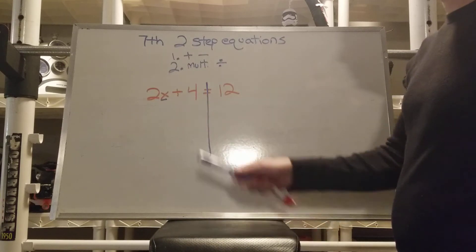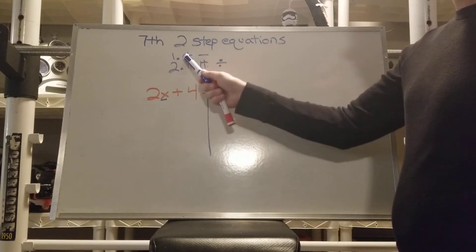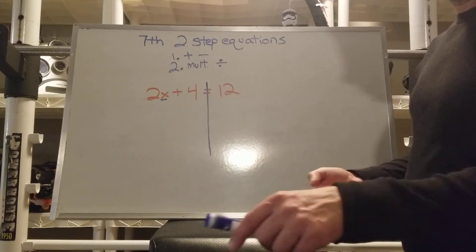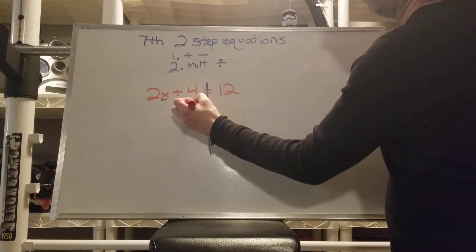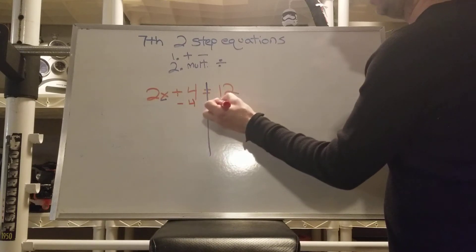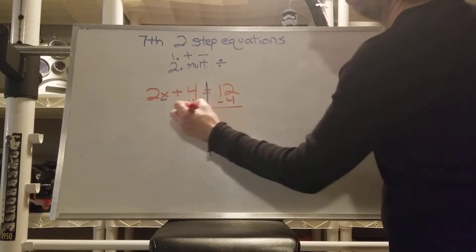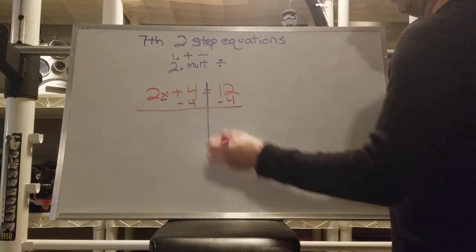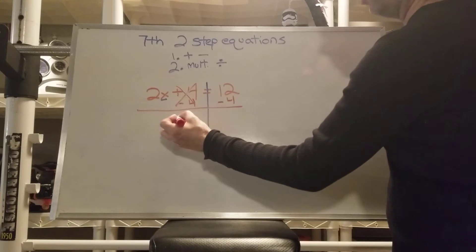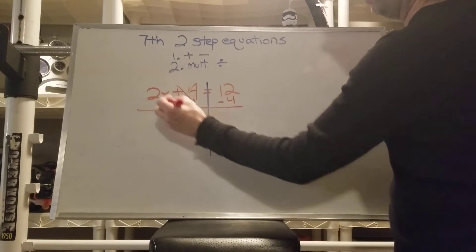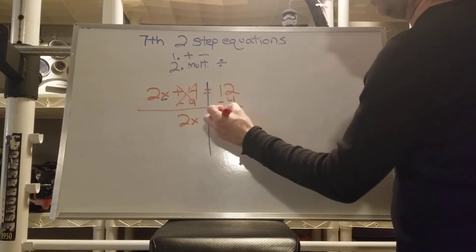Well, which one are we going to get rid of first? According to our steps, we're always going to do the plus and minus first. So to get rid of this plus 4, what I'm going to do is subtract 4. If I do it on one side, I have to do it on the other. So these cancel out. Now all that's left over here is 2x. And then 12 minus 4 is 8.